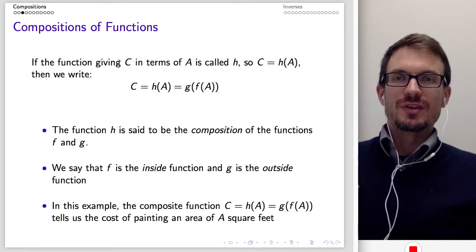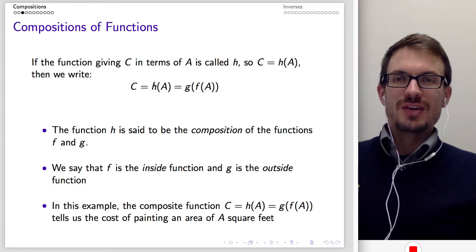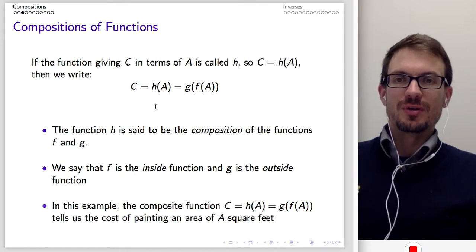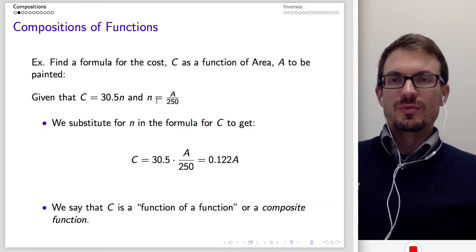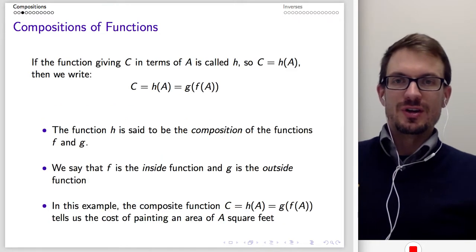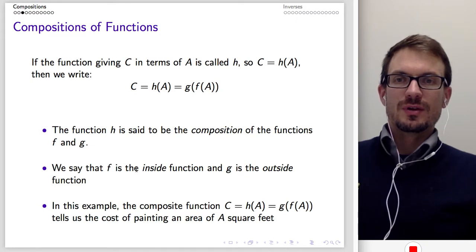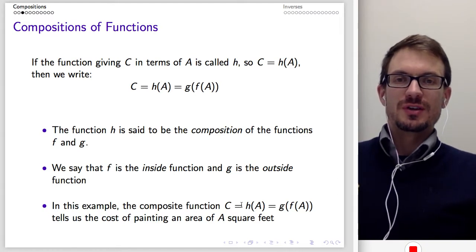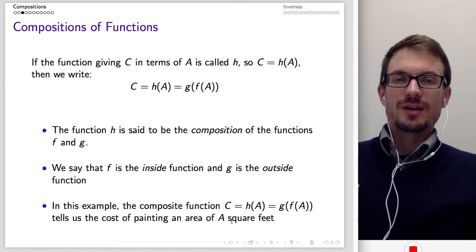More generally, if the function giving C in terms of A is called H, so that C equals H of A, then H of A is defined as G of F of A. The function H is said to be a composition of the functions F and G. In this example, C of A — cost as a function of area — is the composition of the two other functions. F is the inside function and G is the outside function; we always work from inside to outside.